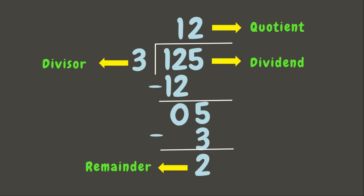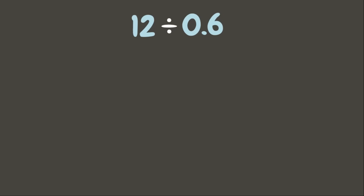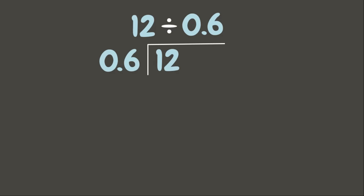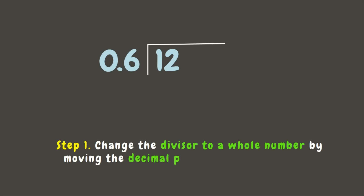Now that you know the parts of division, let's get ready for our lesson. Let's try this first example: 12 divided by 0.6, or 6 tenths. Here we are dividing a whole number by a decimal. But first, let's write it down in long division form.